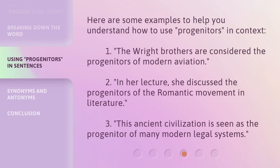Here are some examples to help you understand how to use progenitors in context. First, the Wright brothers are considered the progenitors of modern aviation. Second, in her lecture, she discussed the progenitors of the Romantic movement in literature. Third, this ancient civilization is seen as the progenitor of many modern legal systems.